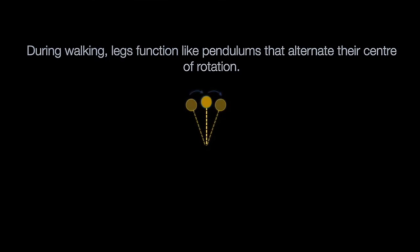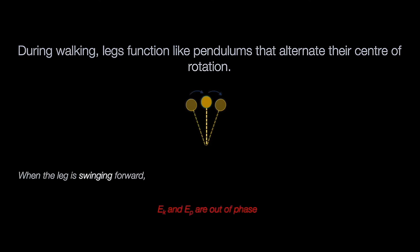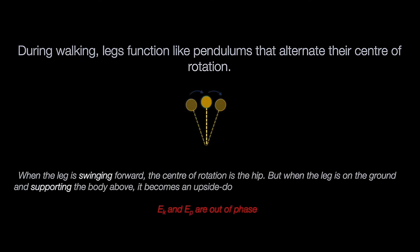Essentially, this means we can evaluate the specific joint motions involved in the phases and sub-phases of the gait cycle, with a view to gaining an understanding about how the body achieves the efficiencies of motion alluded to earlier. It is through studies of human gait with kinematic analyses that we know during walking our legs function like pendulums that alternate their centre of rotation. When the leg is swinging forward, the centre of rotation is the hip. But when the leg is on the ground and supporting the body above, it becomes an upside-down pendulum whose centre of rotation is the ankle.